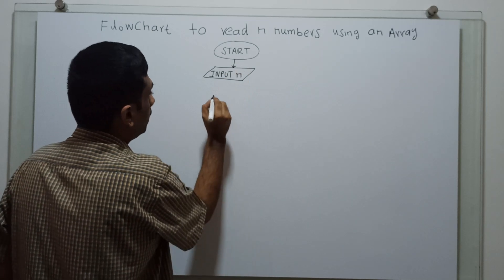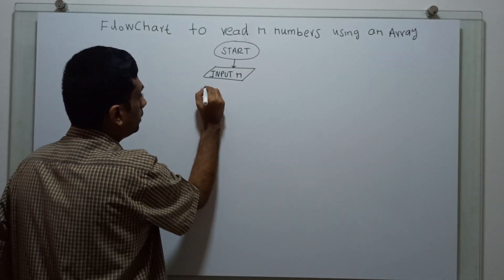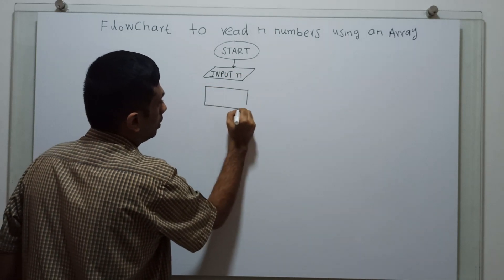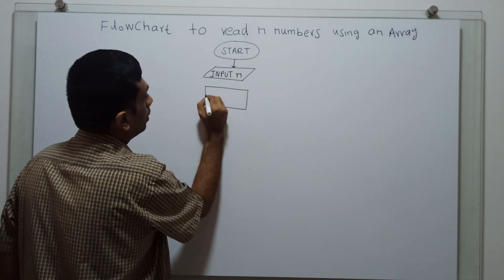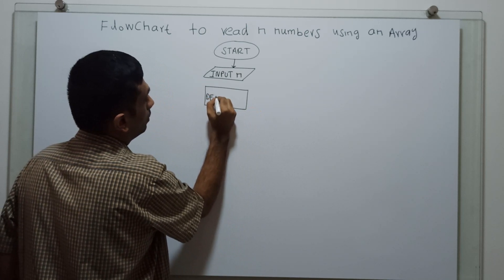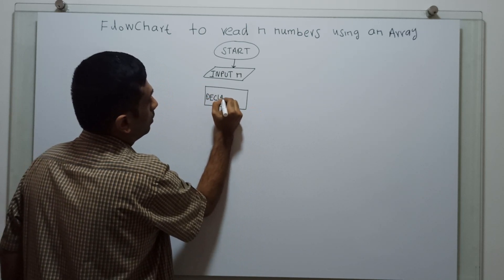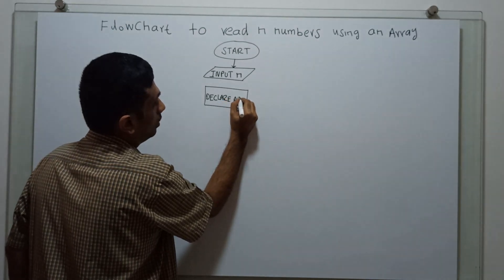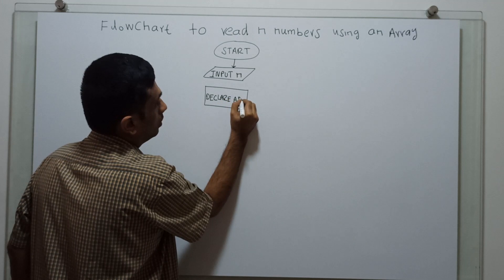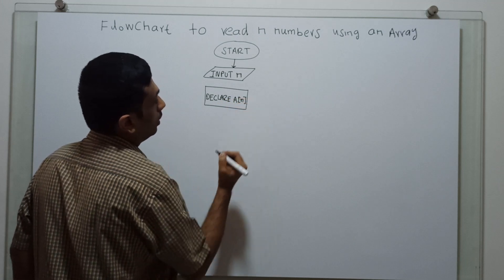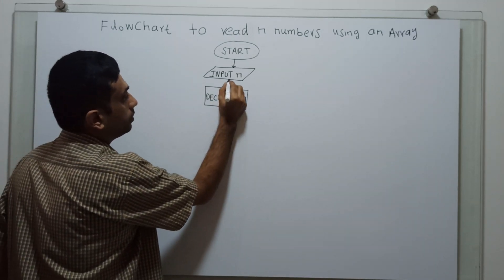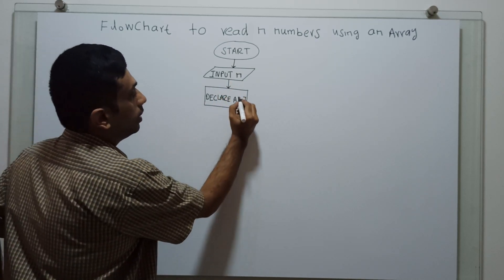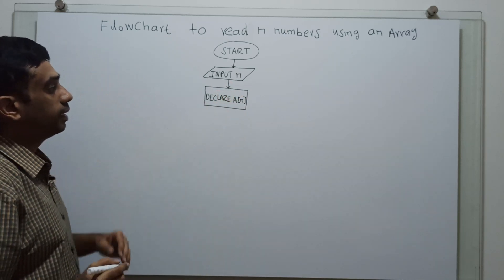Next, I am declaring an array. And n is the size of the array. So, a of n and array, a with the size n.